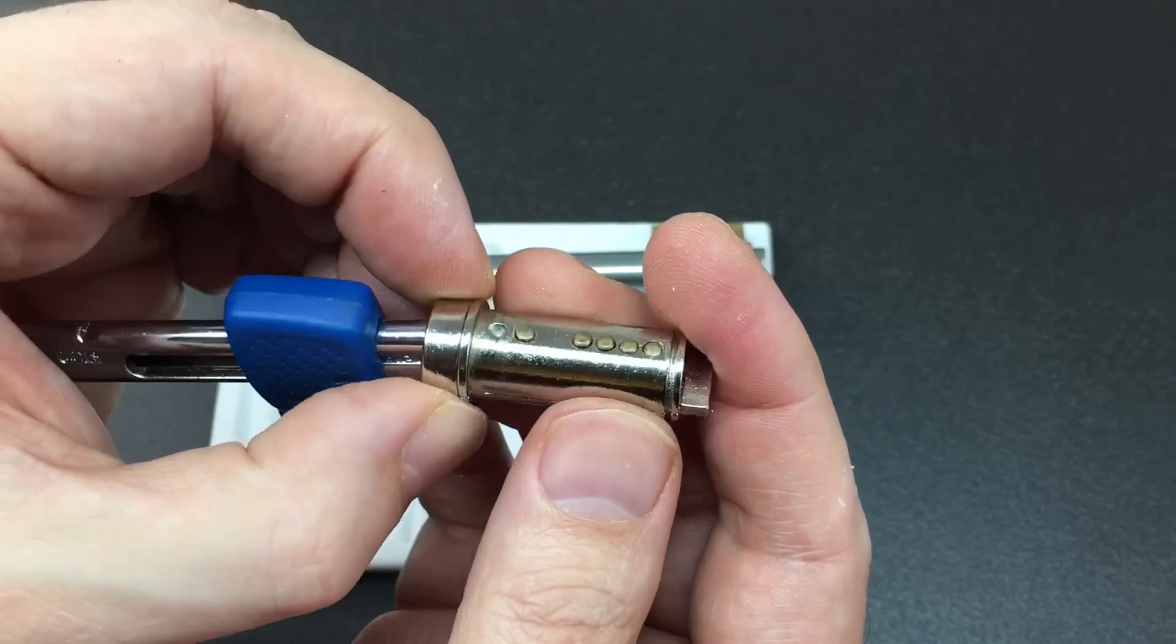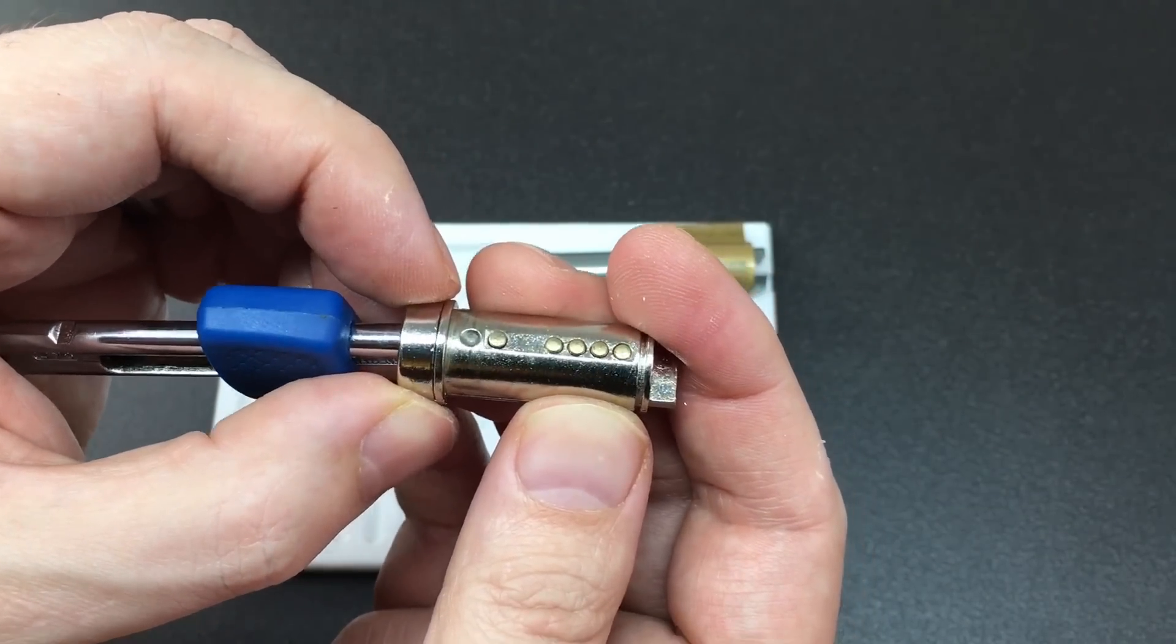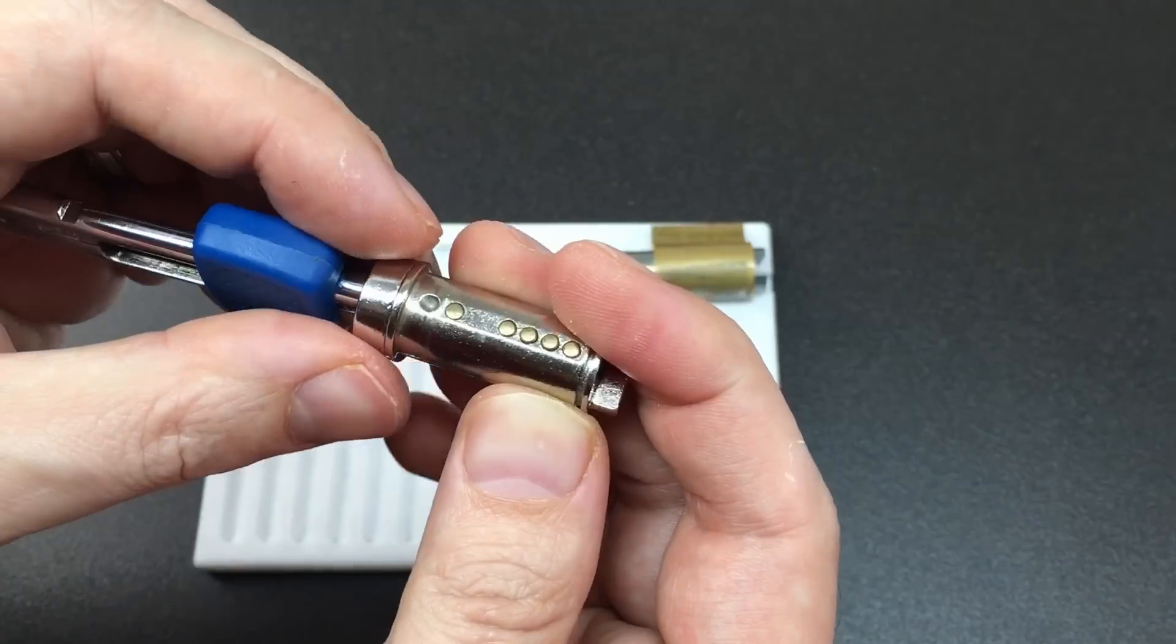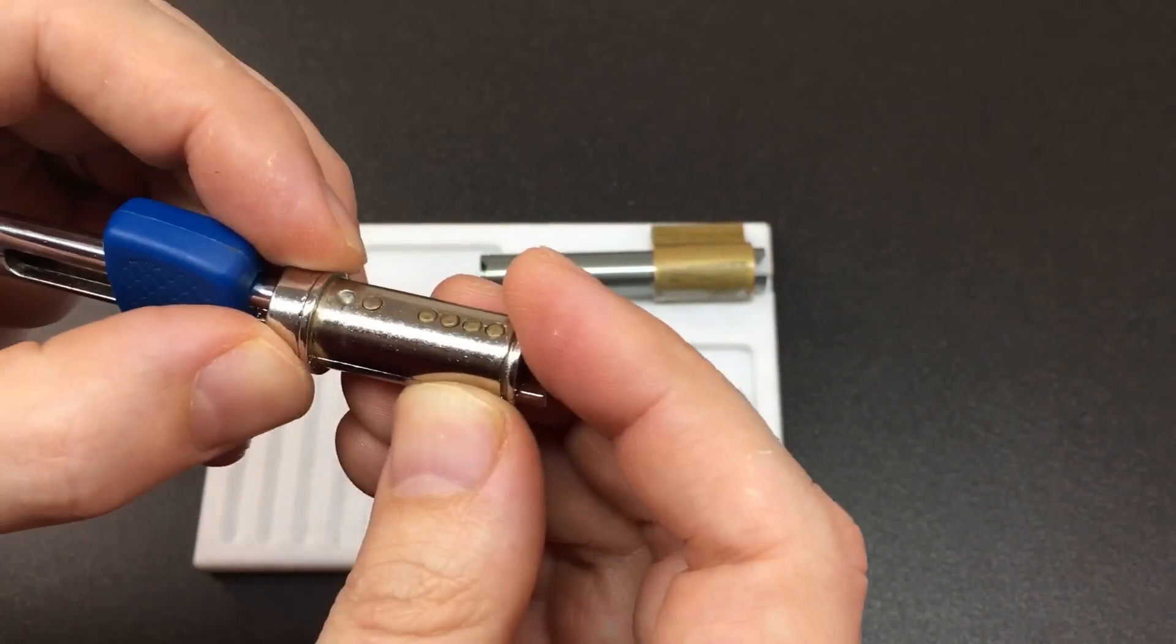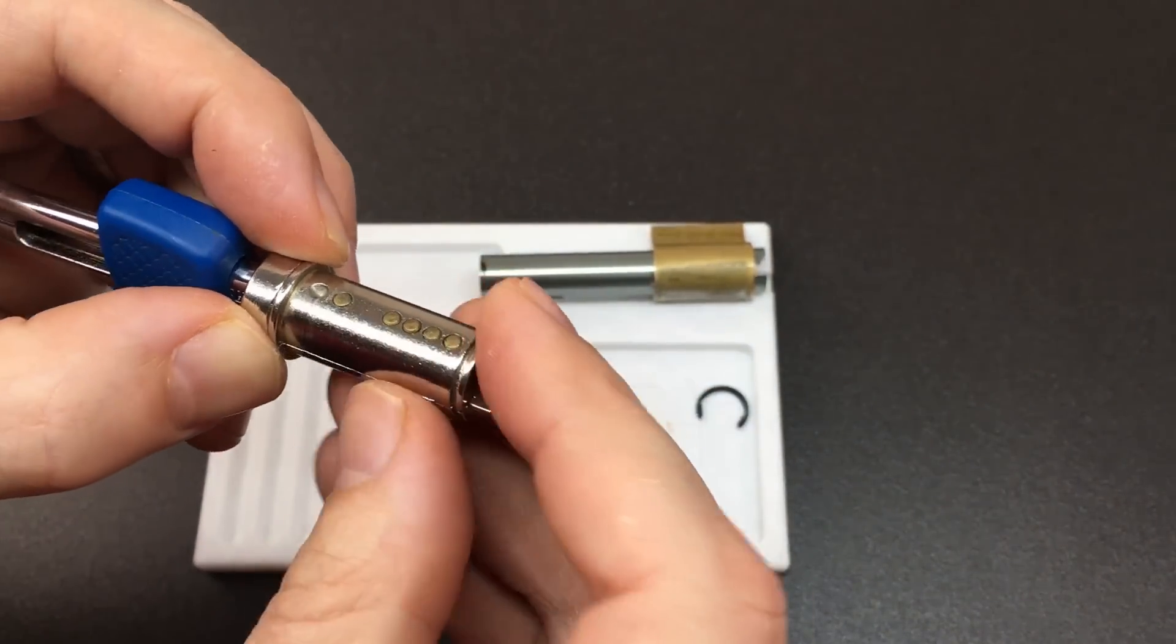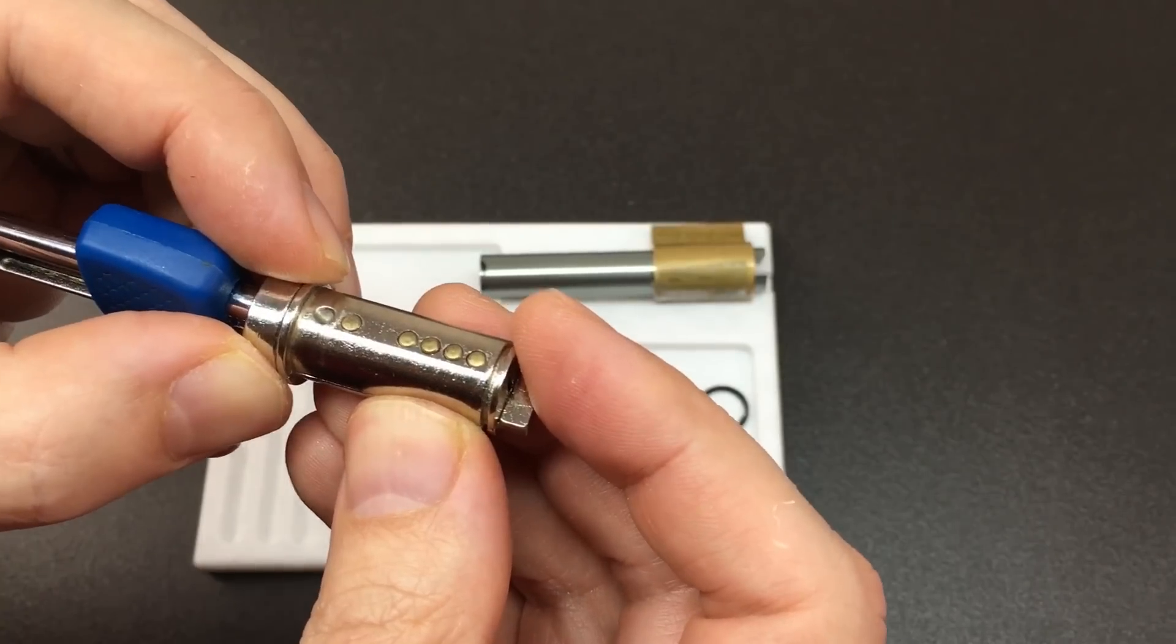The core itself is in two parts, actually more on the inside, so we have to be very careful when handling this. I'm just going to empty the pins out into the pinning tray here, and then we can have a look at this core in a lot more detail.